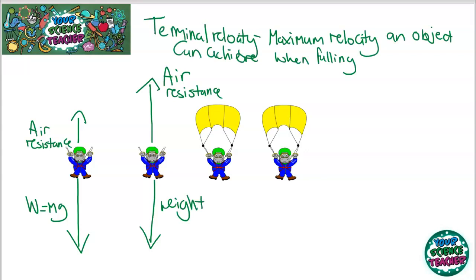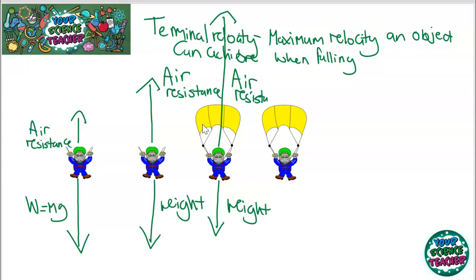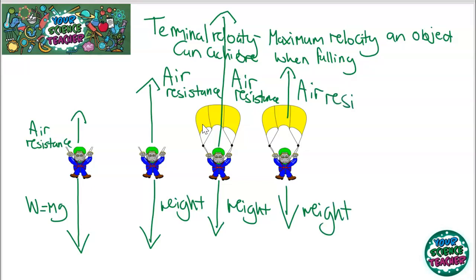At terminal velocity, the weight is equal to the air resistance, meaning the skydiver is now going at a constant speed. When the skydiver pulls the parachute, the air resistance is now a lot greater as there is a larger surface area for the air to hit. This means the weight is a lot less than the air resistance, causing the skydiver to decelerate. However, after a certain amount of time, the air resistance will once again equal the weight, and the skydiver will be travelling at a new, lower constant speed.